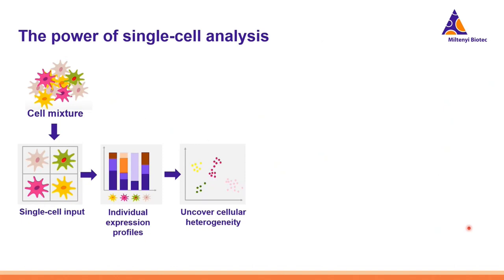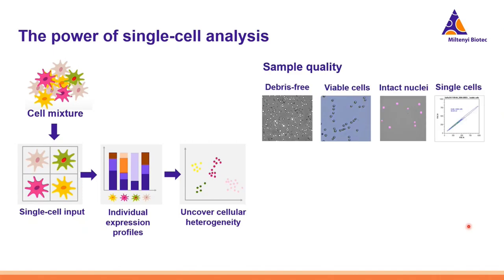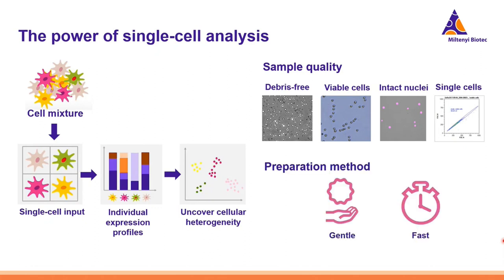A useful approach to analyze the tumor infiltrating leukocytes is applying single cell analysis. The power of this technology helps us by analyzing the individual gene expression profiles of the different cell types to uncover the cellular heterogeneity of the tumor. Before we run such analysis, we need to consider that the sample needs to fulfill certain requirements: samples need to be free of debris, contain highly viable cells or intact nuclei, and of course be in a single cell suspension. It is important to use gentle methods and work fast so that we prevent transcriptional changes in the cells.